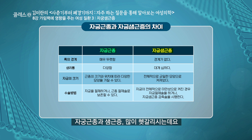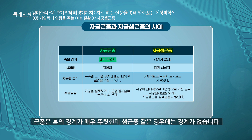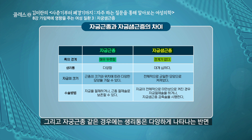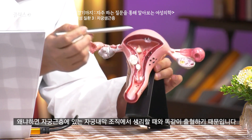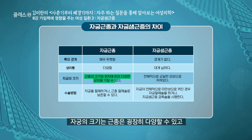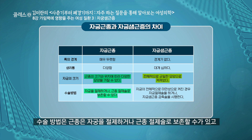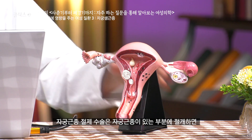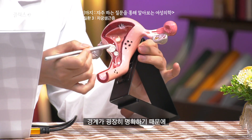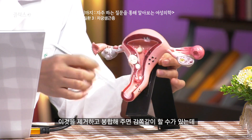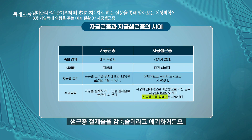자궁 근종과 선근증을 많이 헷갈려 하시는데요. 근종은 혹의 경계가 매우 뚜렷한데 선근증 같은 경우에는 경계가 없습니다. 자궁 근종 같은 경우에는 생리통이 다양하게 나타나는 반면, 선근증 같은 경우는 굉장히 심하게 나타납니다. 왜냐하면 근층에 있는 자궁 내막 조직에서 생리를 할 때와 똑같이 출혈을 하기 때문입니다. 수술 방법은 근종은 자궁 근종 절제술로 보존할 수 있는데, 선근증 절제술은 경계가 명확하지 않아 감축술이라고 얘기를 합니다.